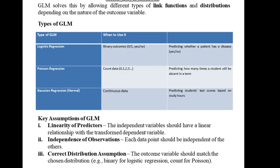The GLM solves these problems by allowing different types of link functions and distributions depending on the nature of the outcome variable. The types of GLM include: logistic regression, used for binary outcomes such as predicting whether a patient has a disease; Poisson regression, used for count data such as predicting how many times a student will be absent in a term; and Gaussian (normal) regression, used for continuous data such as predicting student test scores based on study hours.